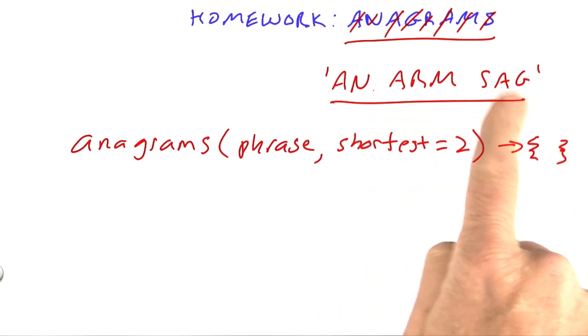But notice that for these three words, they could appear in any of six possible orders, three factorial possible orders. It would be kind of boring and repetitious to see all of those.